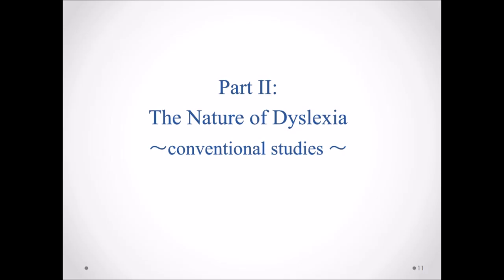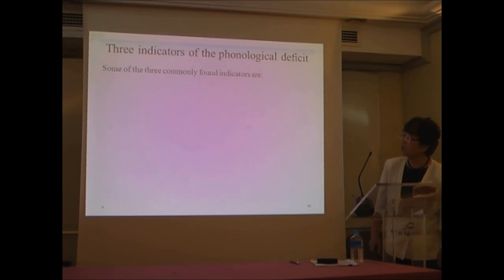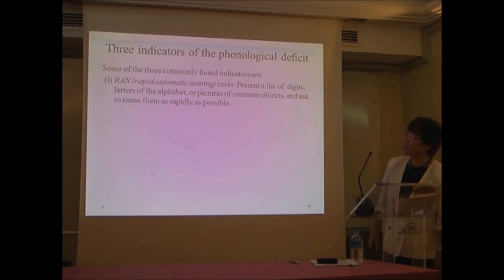The nature of dyslexia. There are three indicators of the phonological deficit. One, rapid automatic naming tasks. We present a list of digits, letters of alphabet, or pictures of common objects and ask to name them as rapidly as possible. An inability for a RAN task indicates difficulties in lexical access, and this is one symptom of dyslexia.